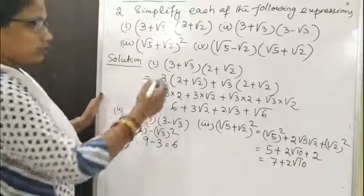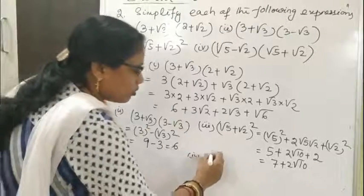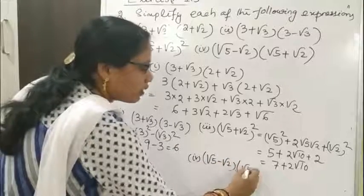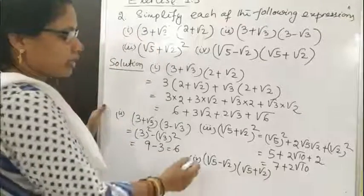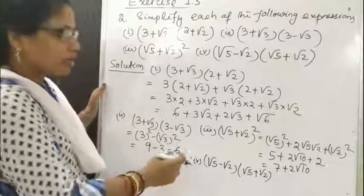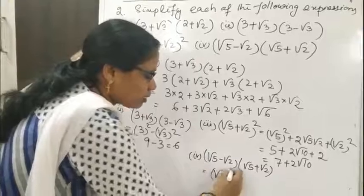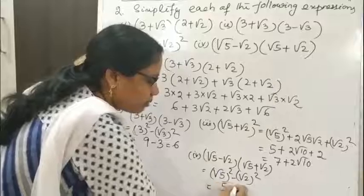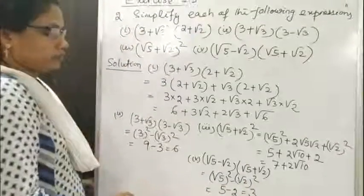Bit 4: (√5 − √2)(√5 + √2). Here we apply the identity (A − B)(A + B) = A² − B². This equals (√5)² − (√2)² = 5 − 2 = 3.